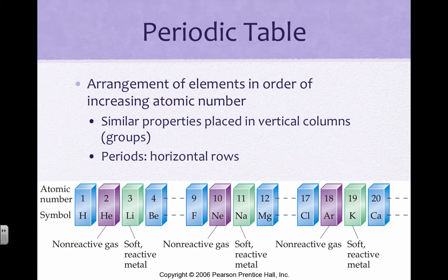Basically, the way the periodic table works is that elements with similar properties are put in vertical columns, also known as groups, and periods are horizontal rows as the number of protons or atomic number increases.